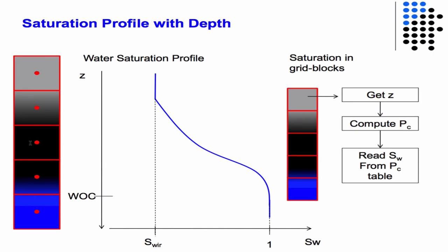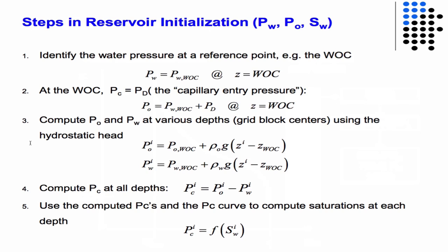When you do that, you'll get a water saturation profile that looks like this: at the water-oil contact line the water saturation is one, and then it decreases down to the residual water saturation.